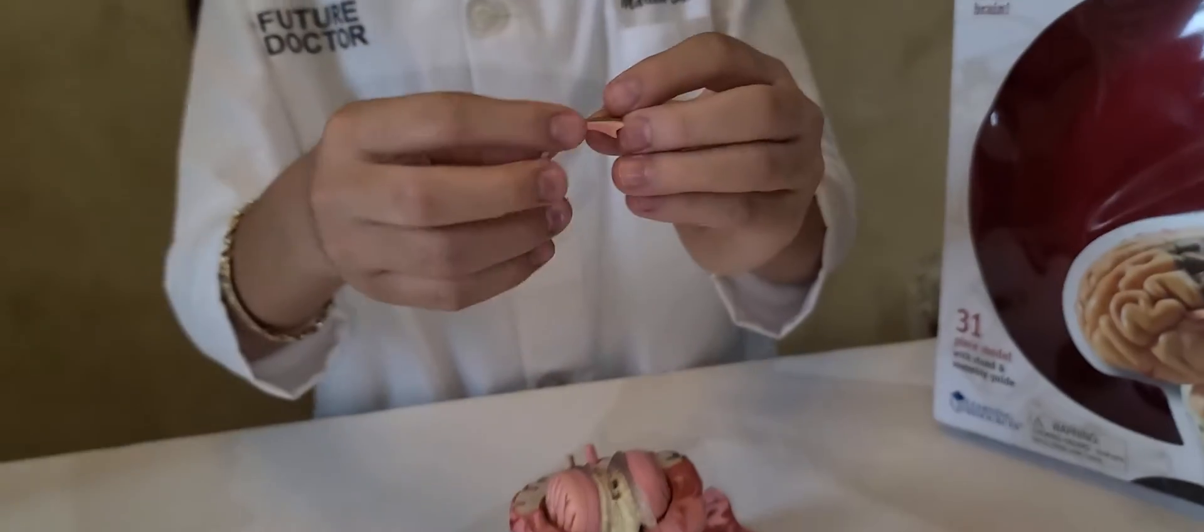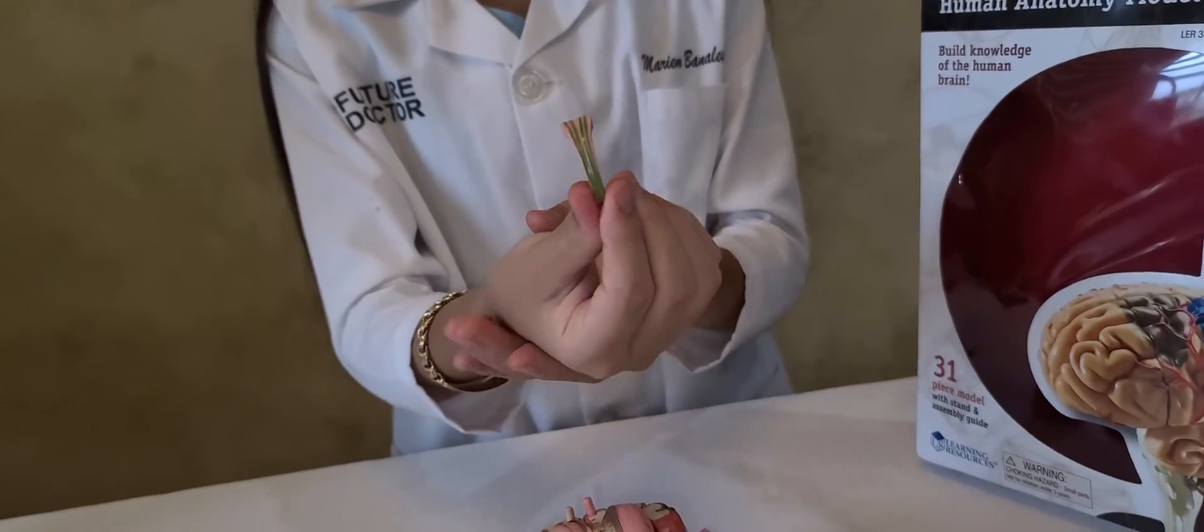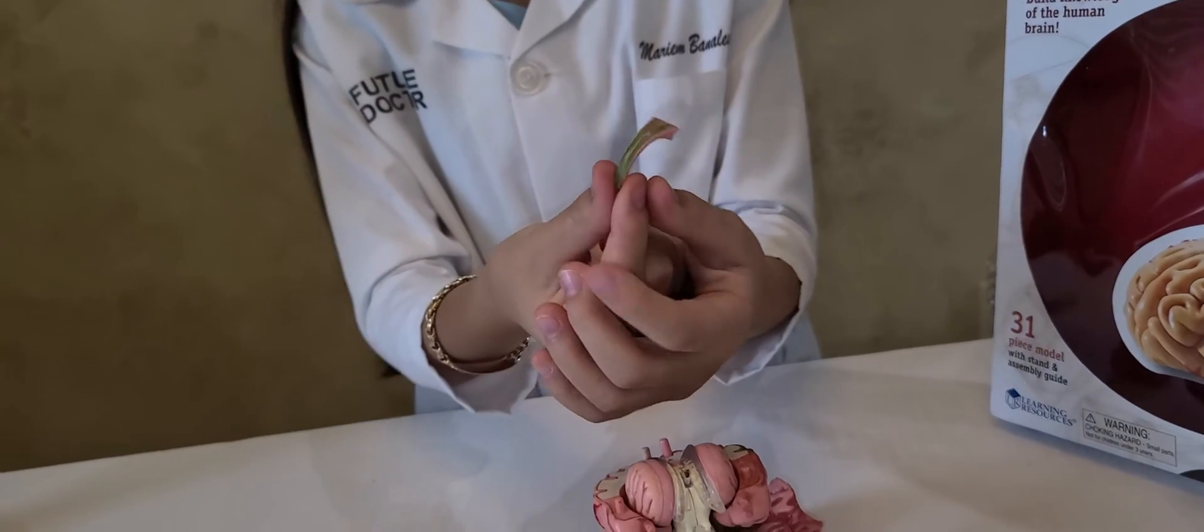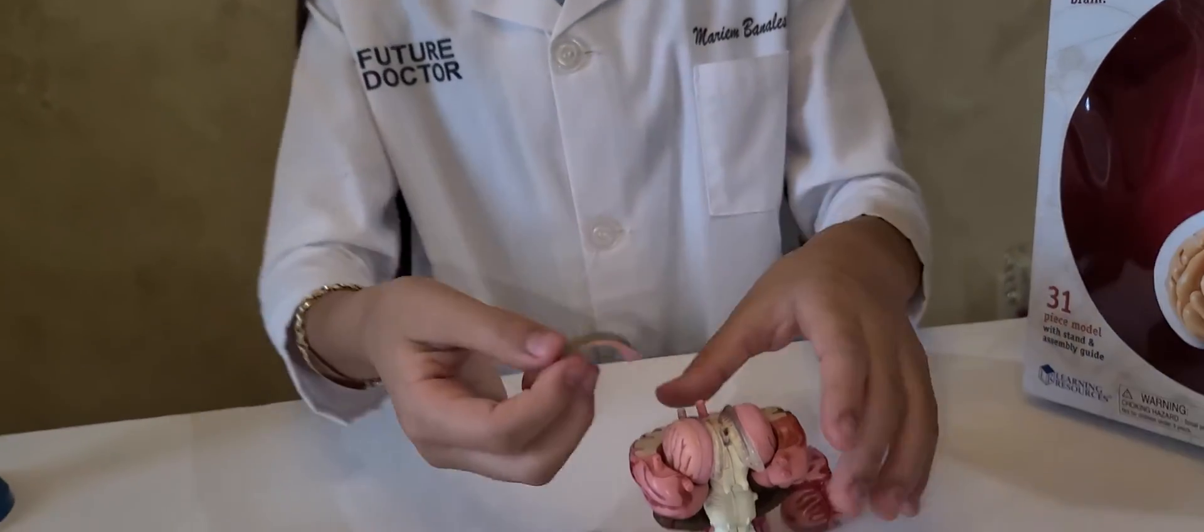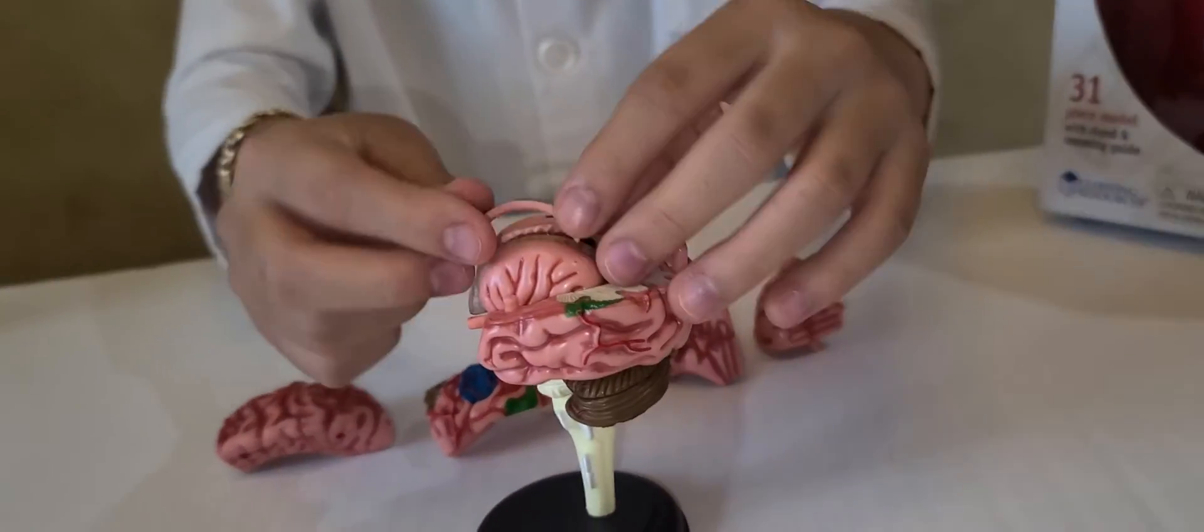The next piece is called the corpus callosum. This small piece connects and communicates between the left and right sides of the brain. This piece will go right here.